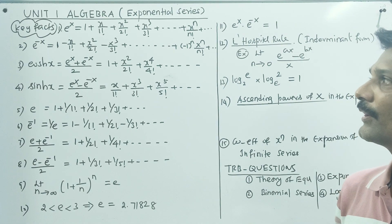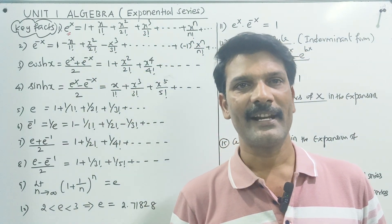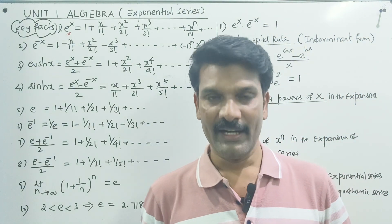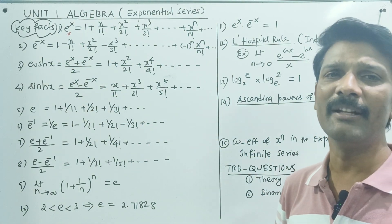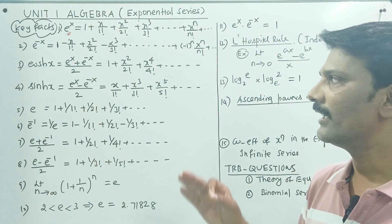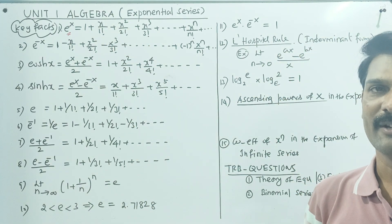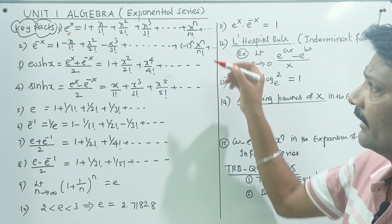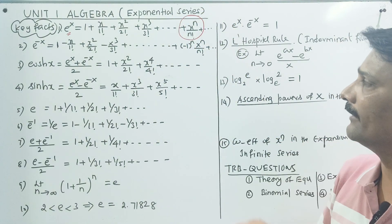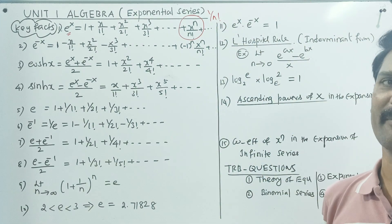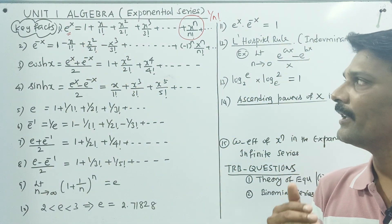That's the first formula for e power x. So e power x — we can learn complex analysis, we can learn real analysis, convergent, divergent, we can learn infinite series, we can learn 3 units. So e power x: this formula is 1 plus x by 1 factorial, plus x squared by 2 factorial, plus x cubed by 3 factorial. The coefficient of x power n is 1 by n factorial.